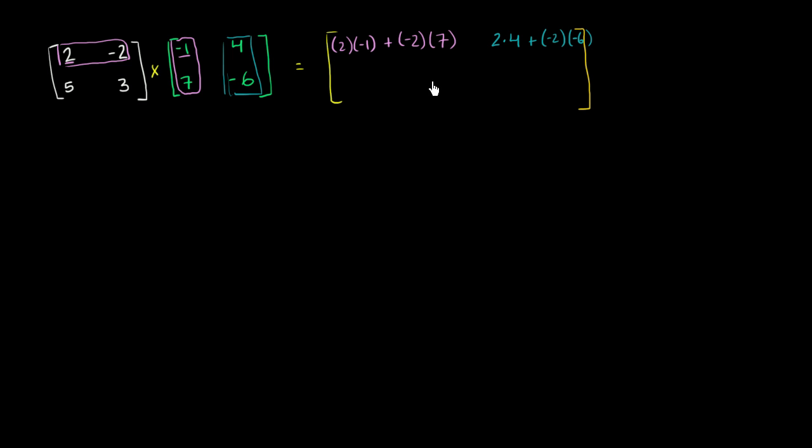And at this point, I encourage you to pause the video. Seeing what you just saw, see if you could complete this. See if you can figure out the bottom left entry and the bottom right entry, and I'll give you a clue. It has something to do with this second row here. So I'm assuming you've given a go at it. Now let's just power through it together. Sometimes matrix multiplication can get a little bit intense.